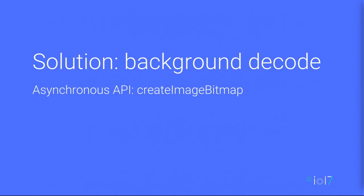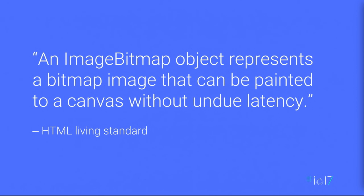The solution is to decode images in the background. Image decode is not something web developers are used to controlling — we just leave it to the browser. But you can take control using a new API called ImageBitmap, released earlier this year, available in Chrome and Firefox. The spec defines it as a performance primitive. In Chrome, we interpret this as wanting to get rid of decode latency.